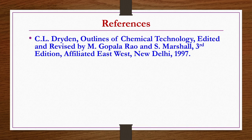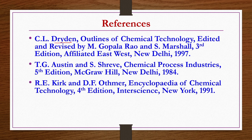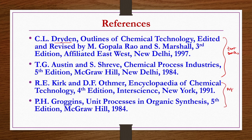References for this course: 'Outlines of Chemical Technology' by Dryden, edited and revised by Gopalrao and Marshall, third edition; 'Chemical Process Industries' by Austin and Steve, fifth edition; 'Encyclopedia of Chemical Technology' by Kirken Atmer, fourth edition; and 'Unit Processes in Organic Synthesis' by Grogin, fifth edition. The first two books should be taken as required textbooks, whereas the third and fourth books may be taken as references for this course.